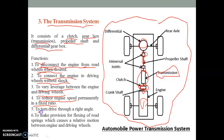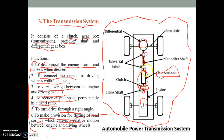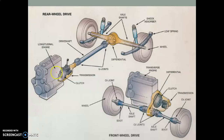The fifth function is to turn the drive through a right angle. The movement of the vehicle in any direction is controlled by the transmission system. Another function is to make provision for flexing of road springs, which causes relative motion between engine and driving wheel. These are some of the key functions of the transmission system, and each part will be discussed in coming chapters.